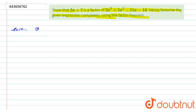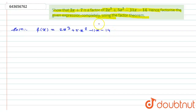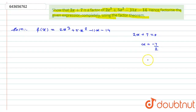First, I will consider the given polynomial as f(x) = 2x³ + 5x² − 11x − 14. Now, to show that 2x + 7 is a factor, I set 2x + 7 = 0, which gives x = −7/2.